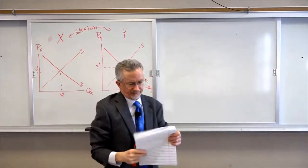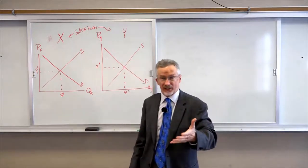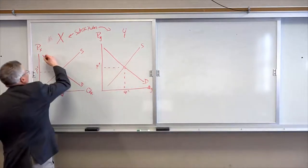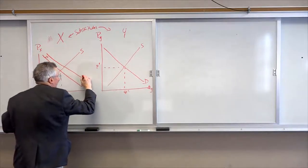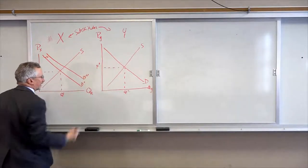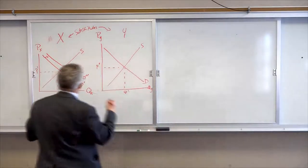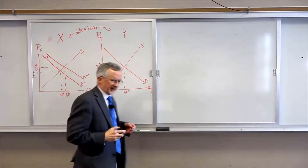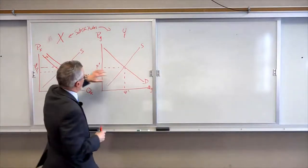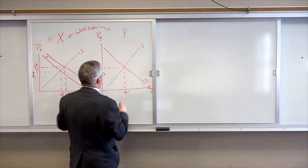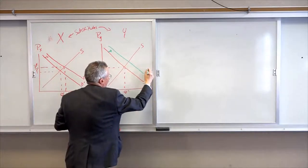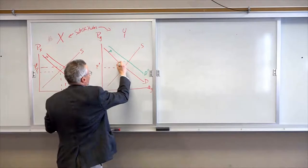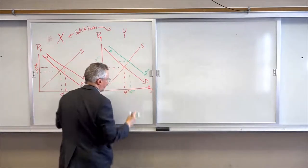They are substitutes for each other — that's how consumers treat them. So what happens? One day there's some sort of a change, an exogenous change. Demand goes up; people's preferences changed for good X. Demand shifts up to D double-prime. The price of X goes up — everyone knows that. But wait, is that the end of the story? It's a substitute. The price just went up, so what happens over here for good Y? The demand for Y goes up to D double-prime because there was the price increase here, and that means the price of Y goes up.